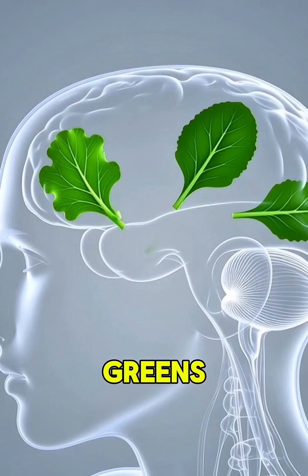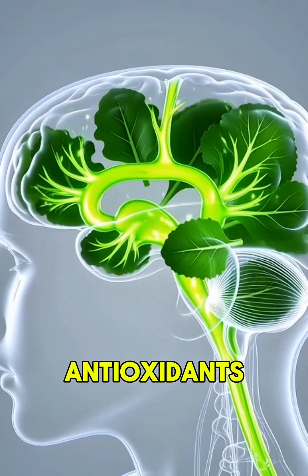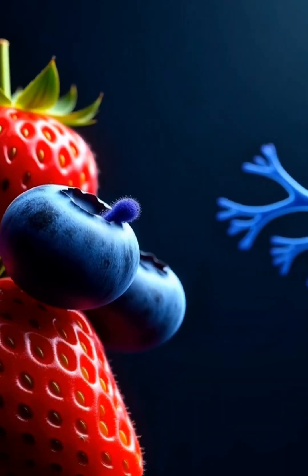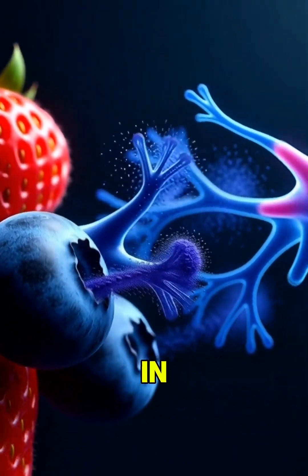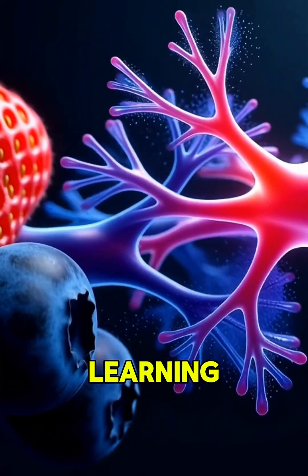Leafy greens like spinach and kale give your brain essential antioxidants and folate. Berries, especially blueberries and strawberries, are rich in flavonoids that help support learning and memory.